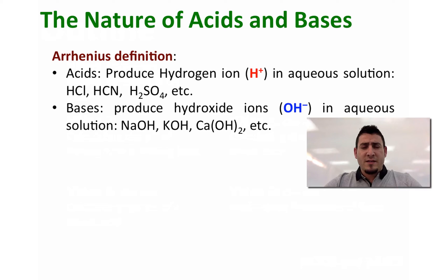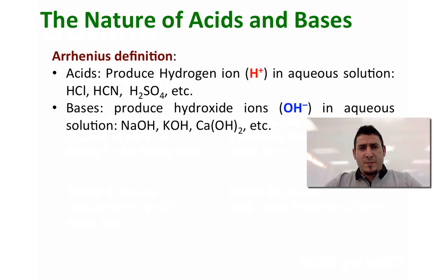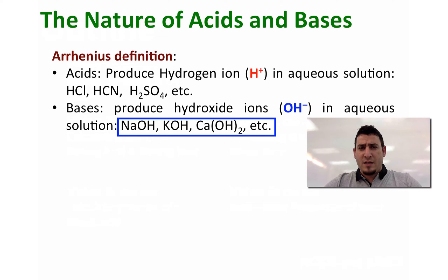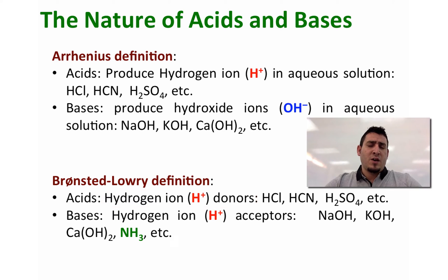For bases, Arrhenius said any molecule or compound that produces hydroxide ions in solution is considered a base, such as sodium hydroxide, potassium hydroxide, and calcium hydroxide, and so on. Brønsted and Lowry said that any molecule that can donate an H⁺ is considered an acid, which is not that different from Arrhenius — actually, it's the same.